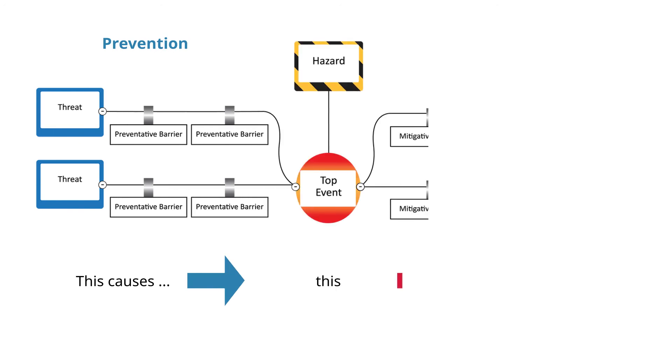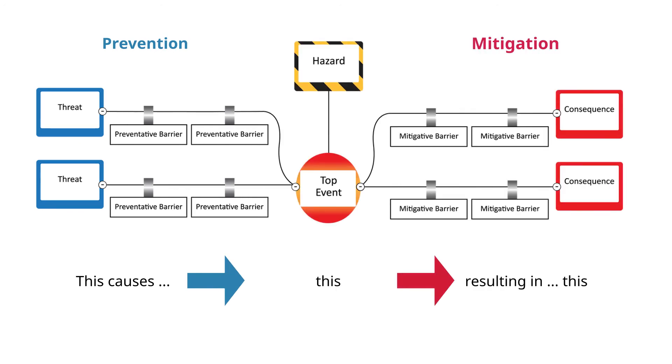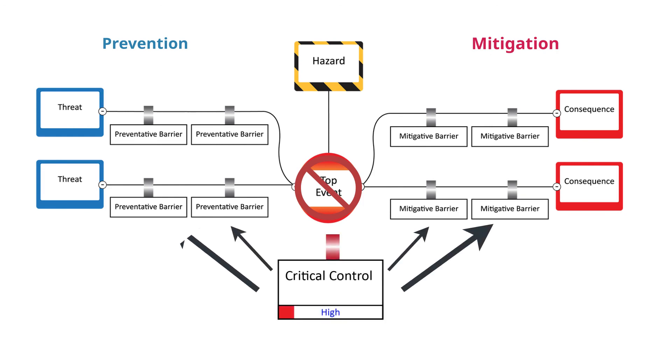This has been a very high-level overview of critical factors, how we determine what they are, and how we control them to make sure that the top event does not occur. We will explore in more detail how you identify critical controls and manage them in other videos.